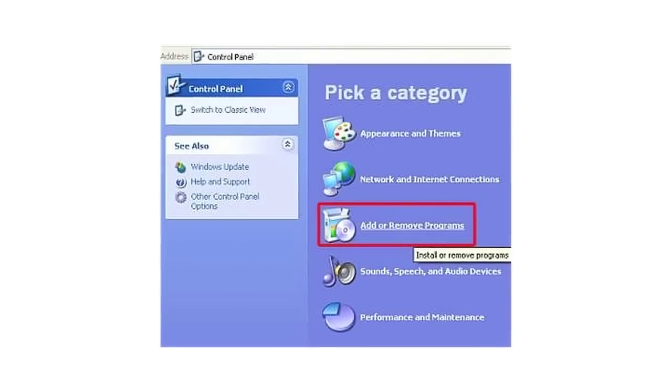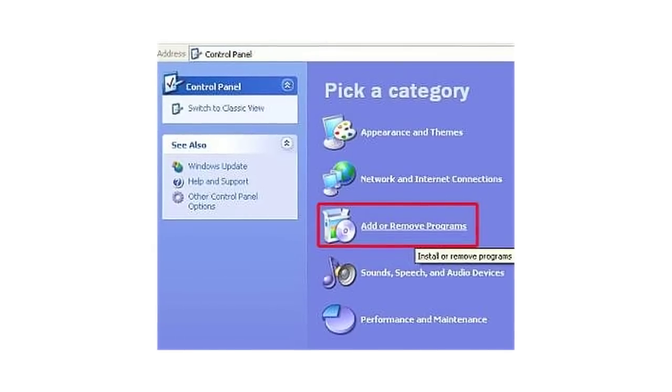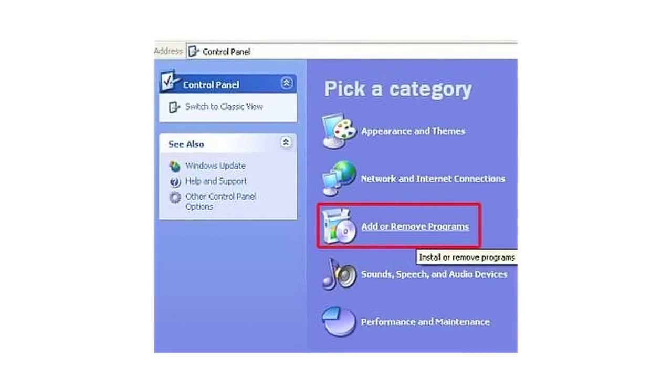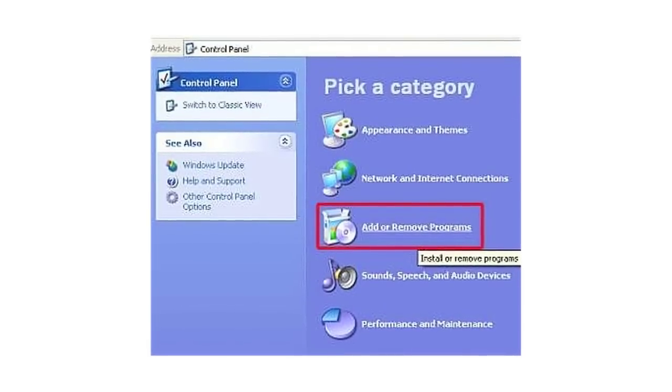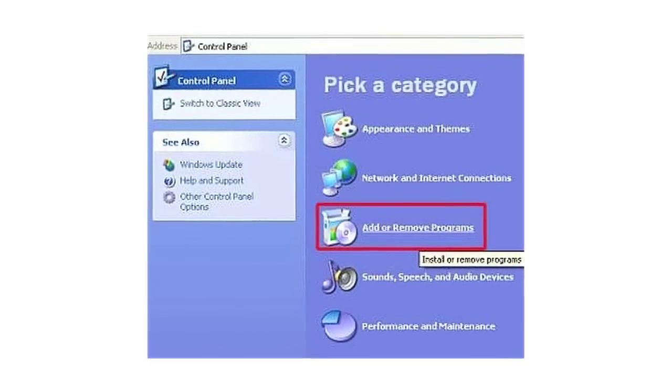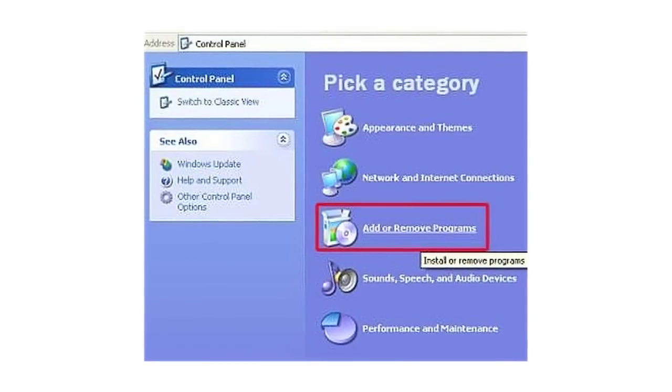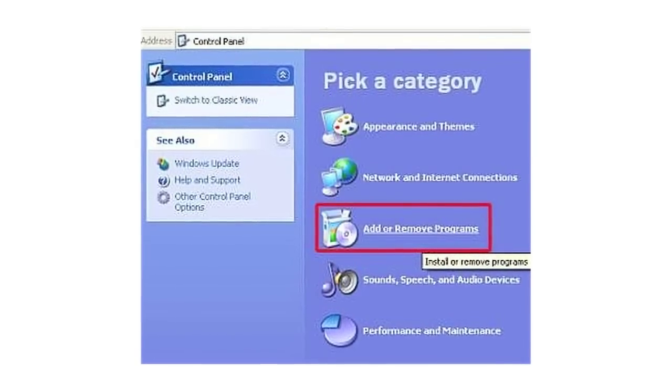If you're using AOL Instant Messenger or AIM on a PC, then you'll need to log into the control panel on your computer, add remove programs, find AOL Instant Messenger, and click remove.